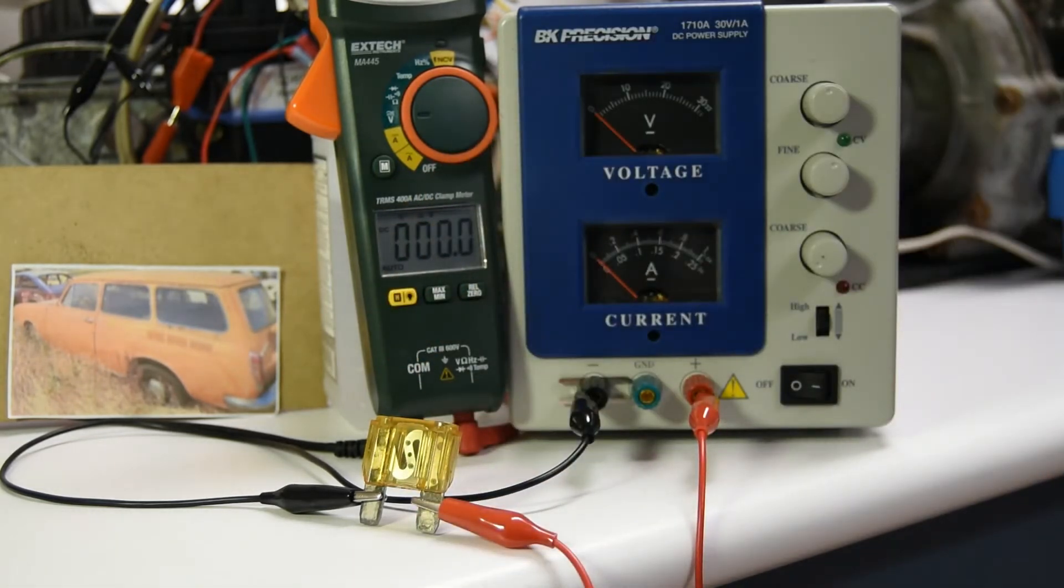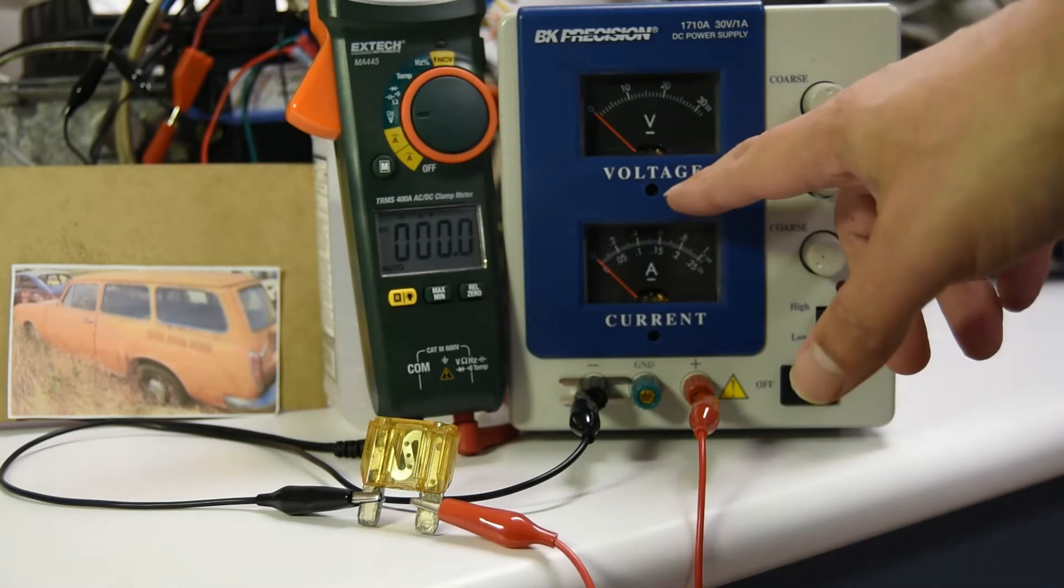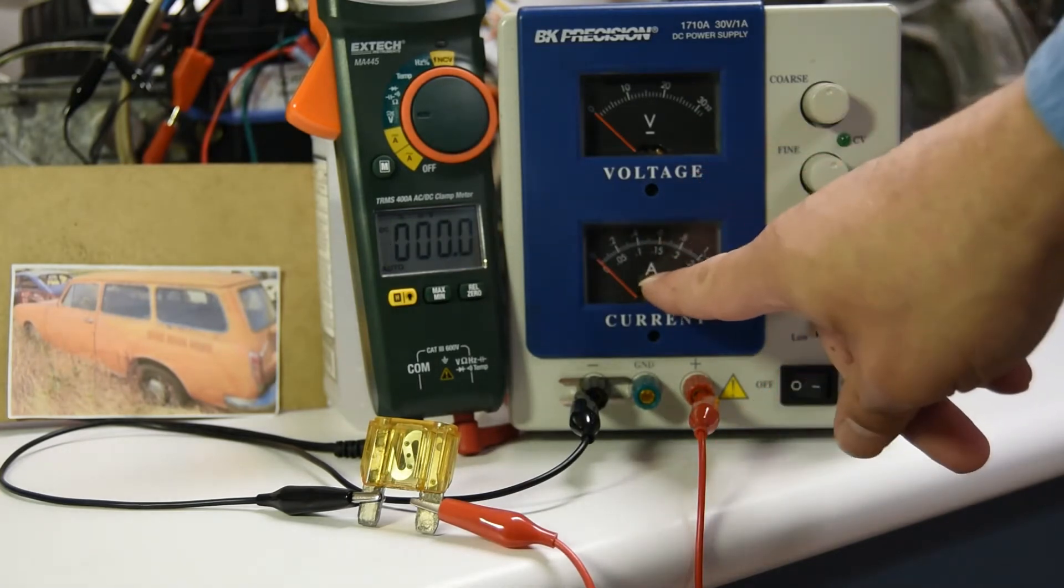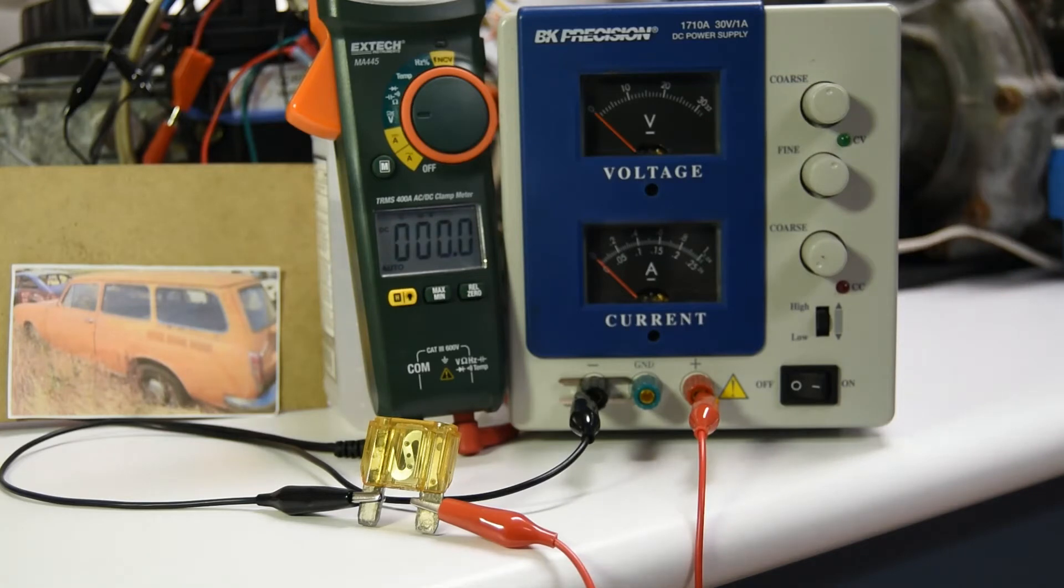Now I'm not doing that, but if anyone remembers V equals IR, if I have a resistance on a fuse and I pass a current through it, which is amps, I should be able to measure a voltage across that fuse.